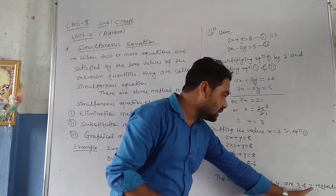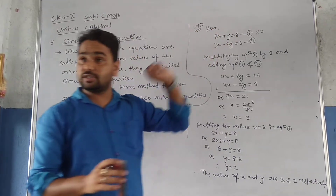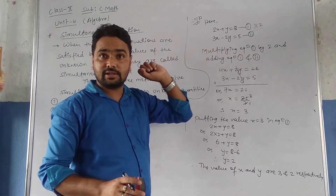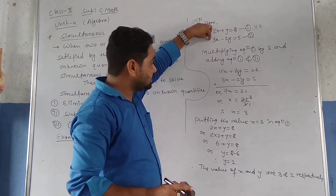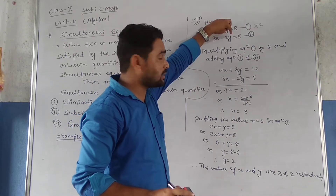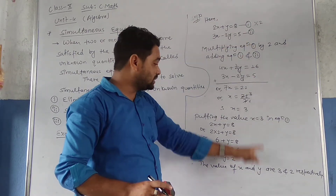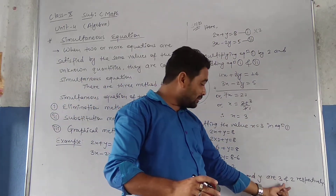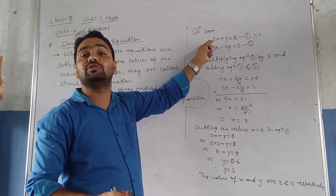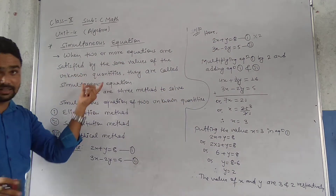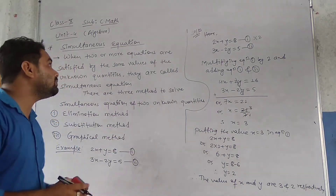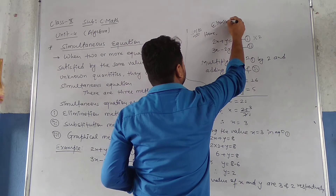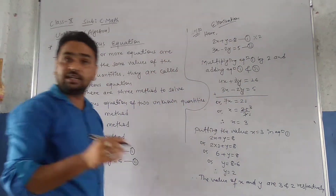Look at x equals to 3 and y equals to 2. These two values satisfy both equations. Let's check: 2 times 3 is 6, plus 2 gives 8 — satisfied. Similarly, 3 times 3 is 9, minus 2 times 2 is 4, gives 5 — satisfied. These two values satisfy both equations, confirming the definition of simultaneous equations. This is the elimination method.